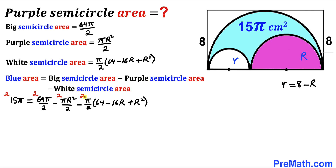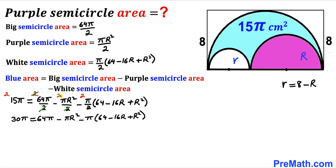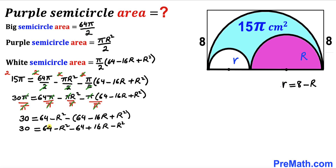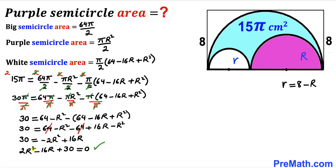Multiplying across by 2 gives 30π = 64π − πR² − π(64 − 16R + R²). Dividing each term by π, then distributing the negative sign: 64 and −64 cancel. Combining like terms and moving everything to one side gives 2R² − 16R + 30 = 0.